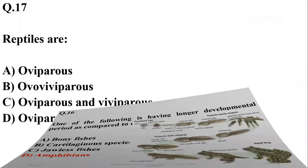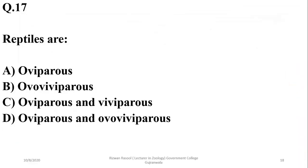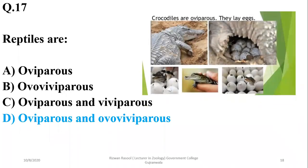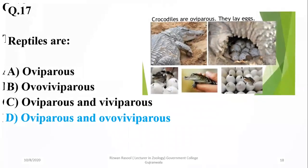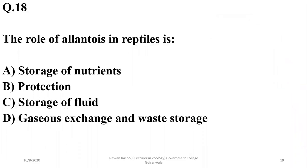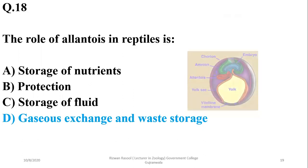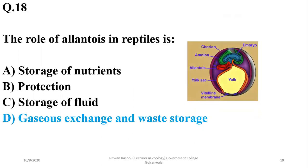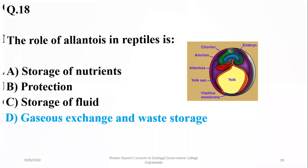Number seventeen: reptiles may be oviparous or ovoviviparous in certain cases, and the right option is delta. The role of the allantois in reptiles is that it is involved in gaseous exchange as well as waste storage in amniotic organisms.